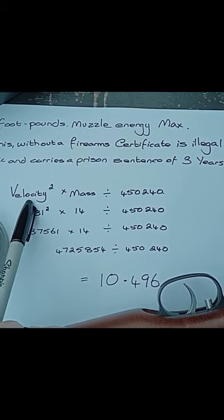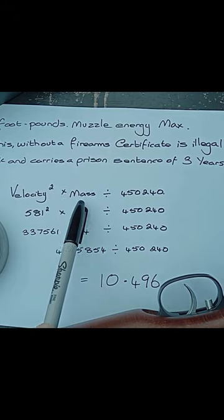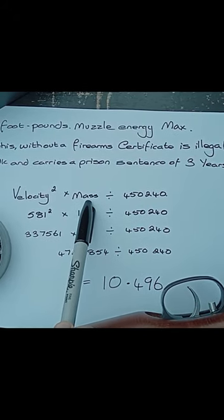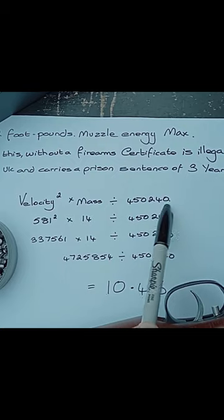So the formula is velocity squared times the weight, the mass of the pellet, divided by 450240.